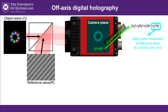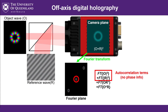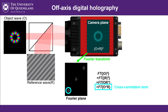The idea is to separate those off-axis cross terms using the tilt of the reference, so we can get the object wave information in isolation and filter out everything else, and we do that in the Fourier plane. We Fourier transform the interferogram, getting the Fourier transform of those four terms individually. The two autocorrelation terms are from the object and reference respectively. The autocorrelation of the reference is just a very bright spot at the center — the Fourier transform of a plane wave is a single spot in Fourier space. On top of that is the autocorrelation of the object wave — the Fourier transform of its intensity — with no phase information.